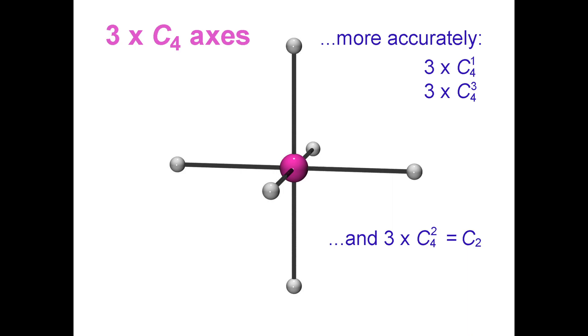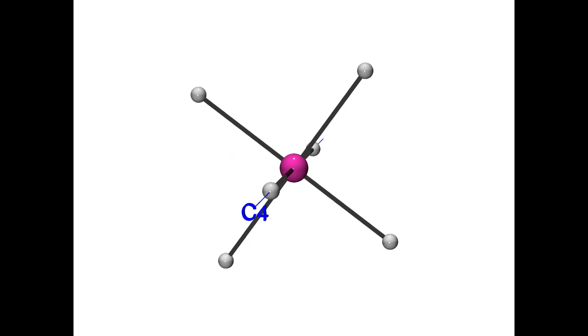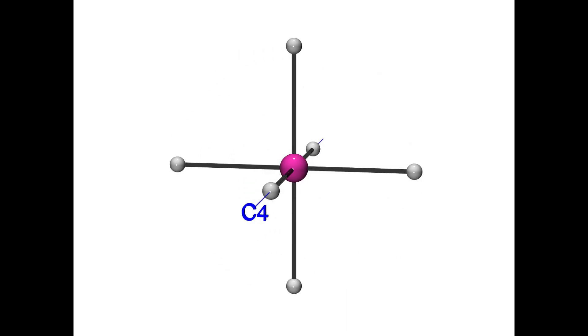A C4 axis is one in which the molecule is rotated by 90 degrees. Let's put one of the C4 axes in now. A second C4 axis exists perpendicular to the first one, here. And here is the third one.